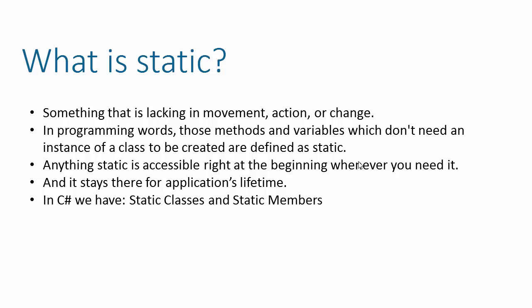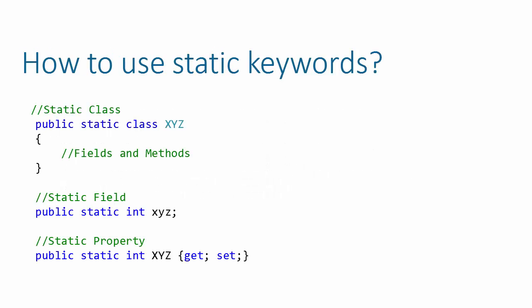In programming terms, those methods and variables which don't need an instance of a class to be created are defined as static. Anything marked as static gets its memory allocated at application start, so it is available at any point in time until the application is closed. We can define two things as static: static classes and static members.